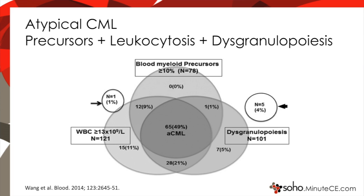Atypical CML is known by the combination of the following characteristics: precursors in the blood of myeloid origin, dysgranulopoiesis disproportional to the overall dysplasia, and white blood cell count elevated greater than 13,000. In the largest study of patients with atypical CML, it was found that about half of patients had blood myeloid precursors greater than 10%, leukocytosis with a white cell count greater than 13,000, and dysgranulopoiesis. In the absence of all three characteristics, two of the three are present in as much as 80% of patients with aCML.